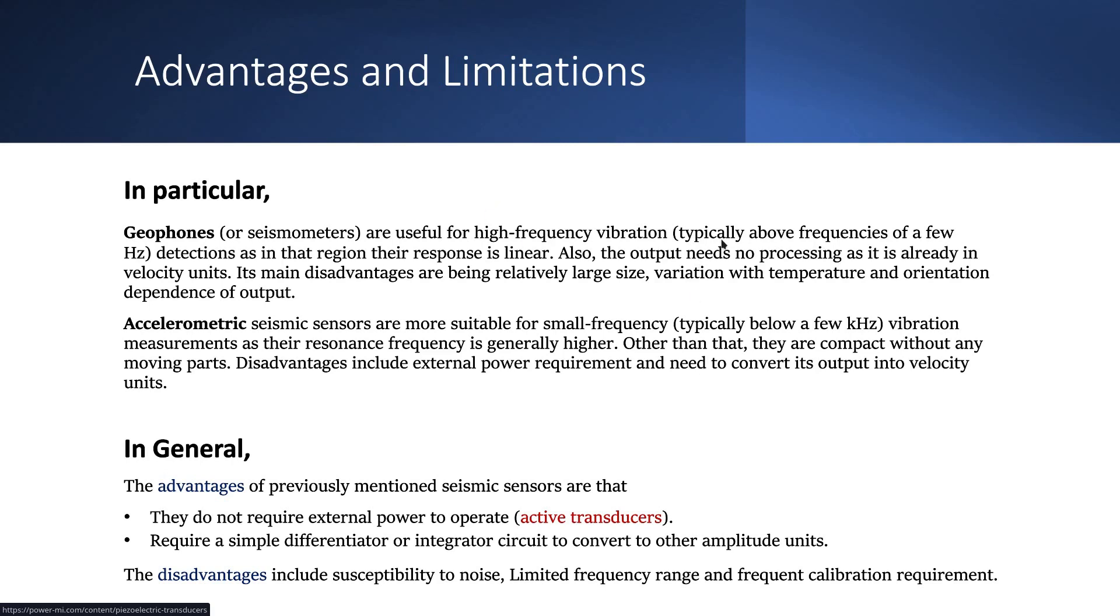Other than that, there is the difference in the output they generate. A geophone typically gives us velocity with respect to time output, whereas for an accelerometric seismic sensor the output is acceleration with respect to time. For better analysis, we would want to convert the acceleration versus time graph to velocity versus time graph, but that can be done with simple computation - integration. Since acceleration is the time derivative of velocity, to get velocity out of acceleration time graph we just need to integrate it, which can be achieved by a simple integrator.